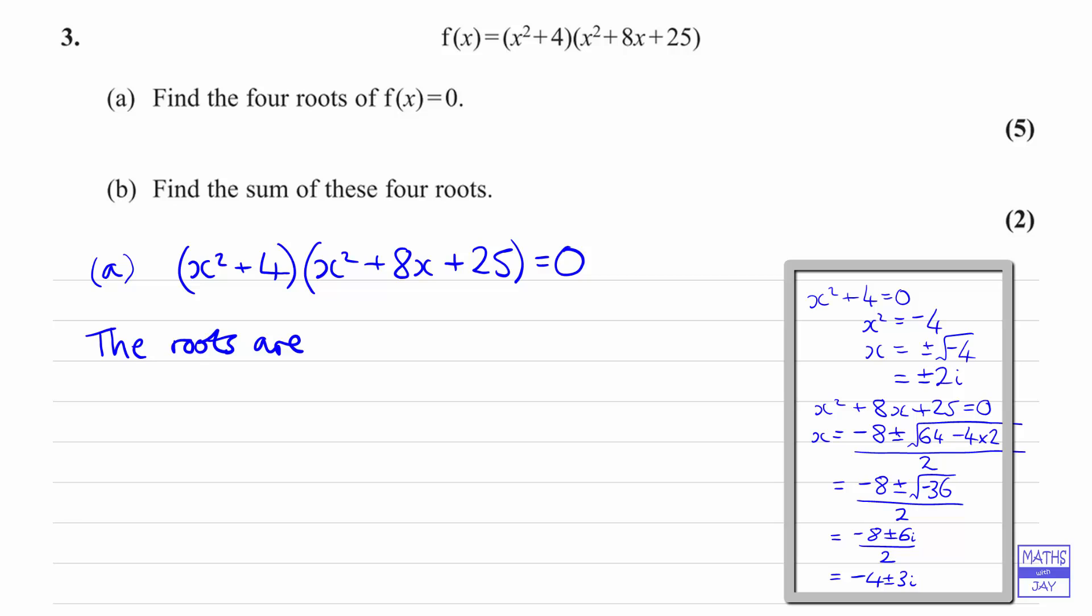So as requested we have found four roots. So let's write them down clearly. We found out that the first two roots were plus or minus 2i, so let's write them down as 2i, -2i, and then the next two were -4 + 3i and -4 - 3i.